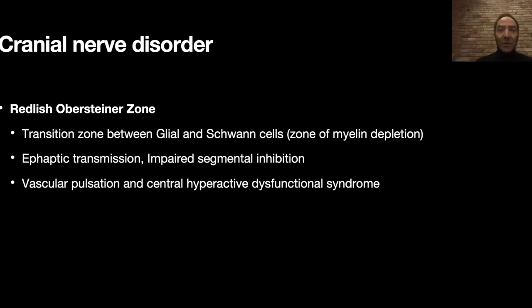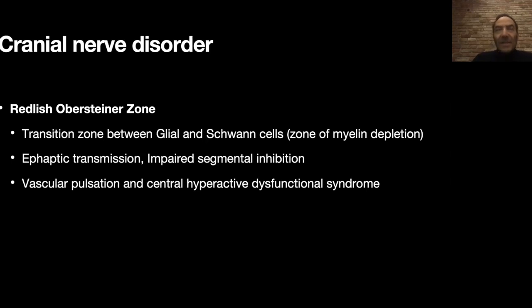But when you do not have any other cause, when your imaging — CAT scan and brain MRI — is pristine, the cause is that this Redlich-Obersteiner zone is irritated by ephaptic transmission. There is an impaired segmental inhibition at that zone caused by a vascular pulsation, and that creates a hyperactive dysfunctional syndrome. All of us might have that, but it does not necessarily translate into trigeminal neuralgia. It is more common in women and more common between the age of 40 to 60.